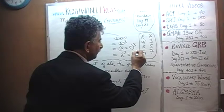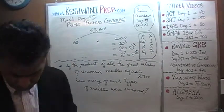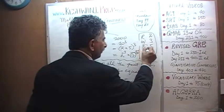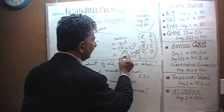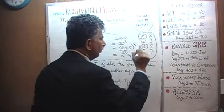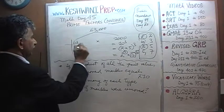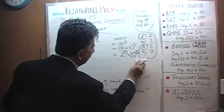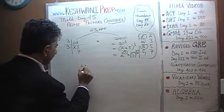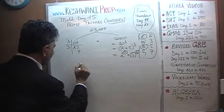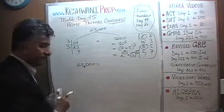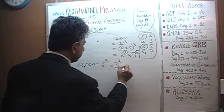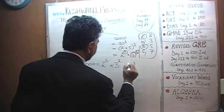We already know we have 3 of the ones with value 5, and those are blue — we have 3 blue ones. We must also have 3 of the ones whose value is 2, and those are red — we have 3 red ones. Now for 63: 63 divided by 3 gives us 21, divided by 3 one more time gives us 7. That's it, we're done. So 63,000 is simply equal to 2 cubed times 3 squared times 5 cubed times 7.